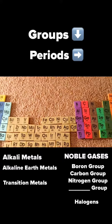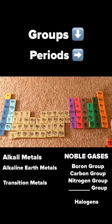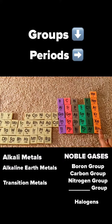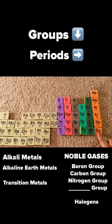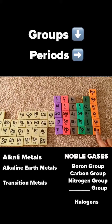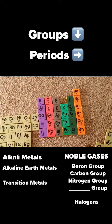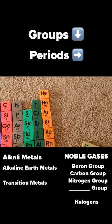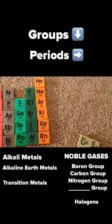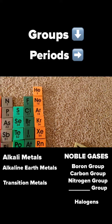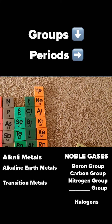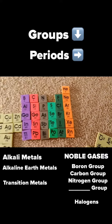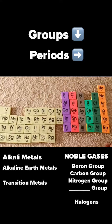Over here on the very far end, the other far end of the periodic table, this group is known as the noble gases. These are called noble gases because they are inert, meaning they are unreactive. They don't form bonds with any other elements naturally.